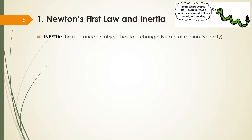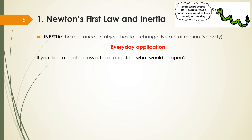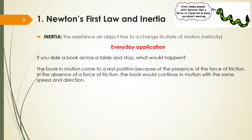In the definition, inertia is the resistance of an object to change its state of motion — its velocity. Every time you have a motion, you have some resistance to change that motion; it wants to keep that motion. So if we slide a book across a table, the book's motion comes to a rest position because of the presence of the force of friction. In the absence of friction, the book would continue in motion with the same speed and direction.